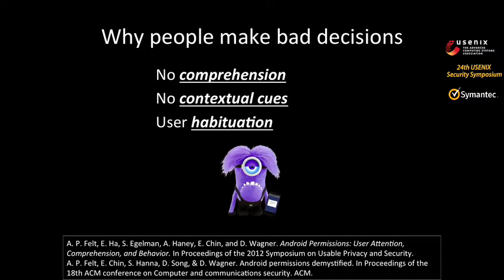Why do people make bad decisions? Few people read the permission list when installing an application, and even fewer understand them correctly. Even if they do understand, they lack the context. Apps are also overprivileged — they are granted more permissions than they should, which distracts users from the permissions they should actually be focusing on.